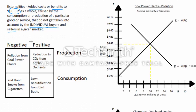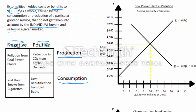So what are the four types? We've got negative externalities and positive externalities, such as pollution and secondhand smoke from cigarettes, and positive externalities like the reduction in CO2 from growing an apple orchard and lawn beautification if your neighbors put out birdbaths. The tricky part is when you get to where these externalities take place, because there's a distinction between production and consumption — negative and positive externalities of each. Where the externality happens makes a difference when you get to the graphical interpretation.